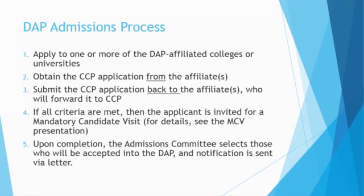So how does the admissions process work? If you are a high school senior, you begin by applying to one or more of the DAP affiliated colleges or universities listed on the previous slide. Then you'll receive the CCP application from your advisor at the affiliate school. Once you complete it, you'll submit the CCP application back to your advisor at the affiliate school, who will then forward it to CCP. If all criteria are met, then you may be invited for a mandatory candidate visit. After your visit, the admissions committee selects those who will be accepted into the DAP, and a notification is sent via letter.